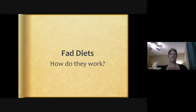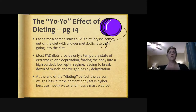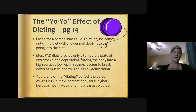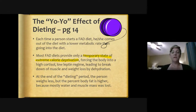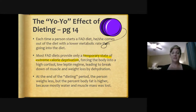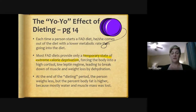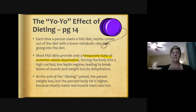Fad diets and the yo-yo effect: each time a person starts a fad diet, they come out with a lower metabolic rate than going in. Most fad diets provide only a temporary state of extreme calorie deprivation, forcing the body into a high cortisol, low leptin regime, leading to breakdown of muscle and weight loss by dehydration. By the end of the dieting period, the person weighs less but the percentage of body fat is higher — because fat weighs less than muscle, and muscle was lost during starvation.